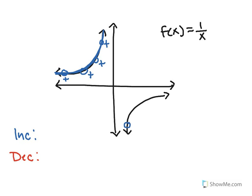On the other branch, picking a point here — that's a very steep positive slope. Moving along, all slopes on this branch are also positive. So there are no decreasing parts of this function. With the asymptote at x = 0, the increasing intervals are (−∞, 0) and (0, +∞).